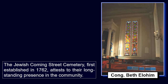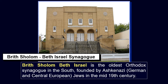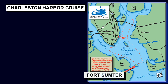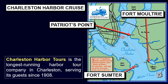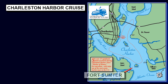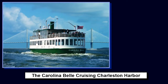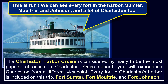Sephardic Jews migrated to the city in such numbers that by the beginning of the 19th century and until about 1830, Charleston was home to the largest and wealthiest Jewish community in North America. The Jewish Cumming Street Cemetery, first established in 1762, attests to their long-standing presence in the community. B'rith Shalom Beth Israel is the oldest Orthodox synagogue in the South, founded by Ashkenazi, German and Central European Jews in the mid-19th century. Charleston Harbor Tour is the longest-running harbor tour company in Charleston, serving its guests since 1908. The harbor tour lasts 90 minutes and is a non-stop, live-narrated harbor cruise featuring 75 Charleston attractions spanning almost 20 miles.